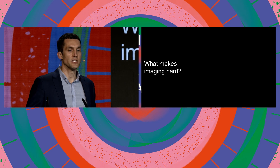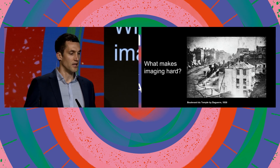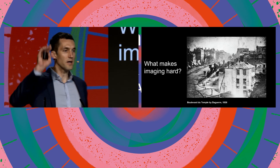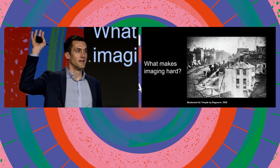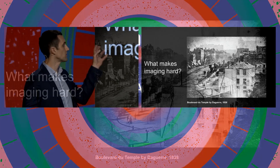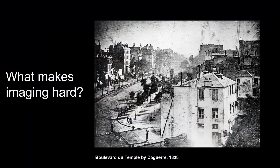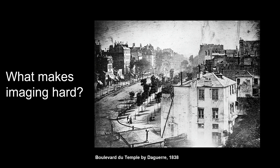So what makes imaging hard? Here's an image — a very famous image. It's an image taken on a street in Paris during the day. If you look at that image for a while, something sticks out that is kind of odd. One thing that is odd is that there is no person on the street. It's very hard to identify a person on the street, even though it's during the day in Paris, and there are no horses either.